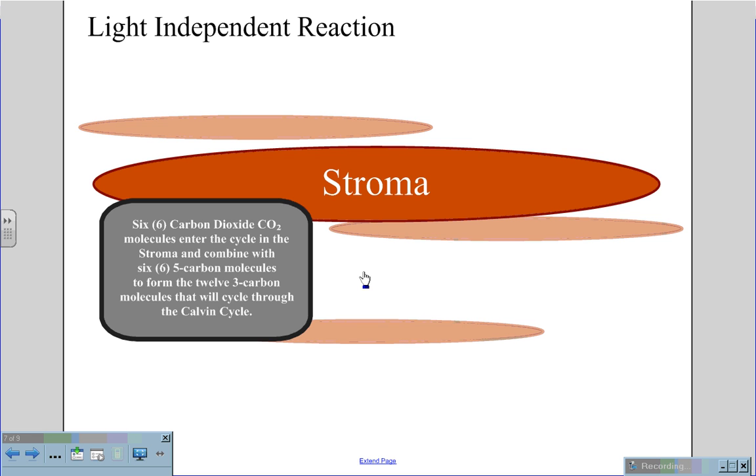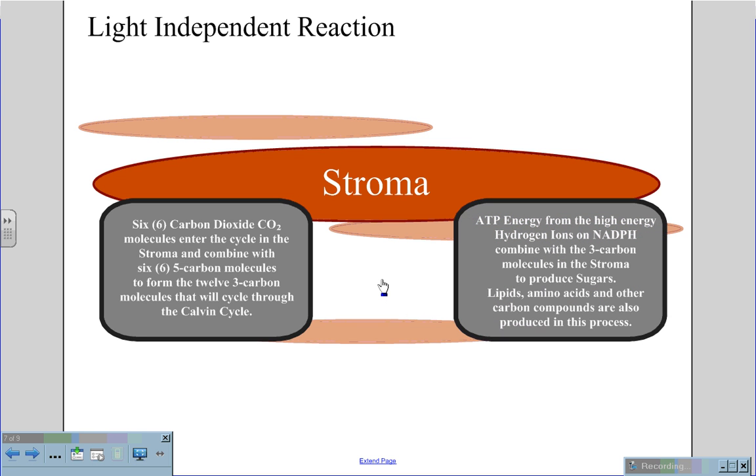Now, these three-carbon molecules will then travel through what is called the Calvin cycle, and during the Calvin cycle, the ATP energy from the light-dependent reaction will cause the hydrogen ions from the NADPH and these three carbon molecules in the stroma to produce the sugar.